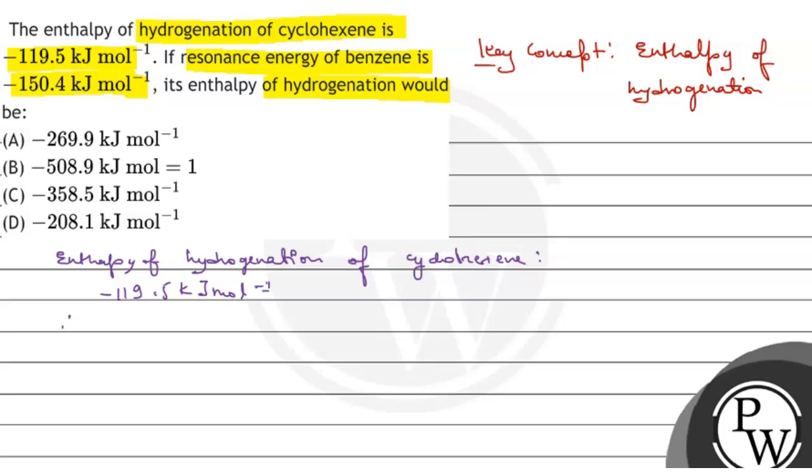Therefore, we can say the calculated enthalpy of benzene is given by 3 times -119.5, which equals -358.5 kJ/mol.